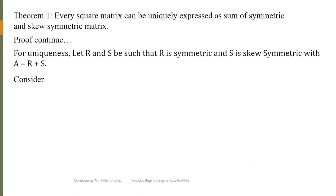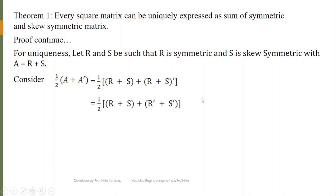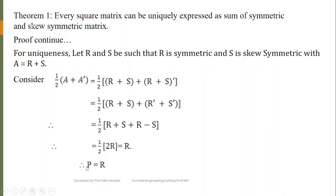We consider P = (1/2)(A + A^T), and since A = R + S, we replace A by R + S. So we get (1/2)(R + S + (R + S)^T) = (1/2)(R + S + R^T + S^T). Since R is symmetric, R^T = R, and since S is skew-symmetric, S^T = -S. The +S and -S cancel, giving 2R/2 = R. So P = R, which preserves the uniqueness of matrix P.